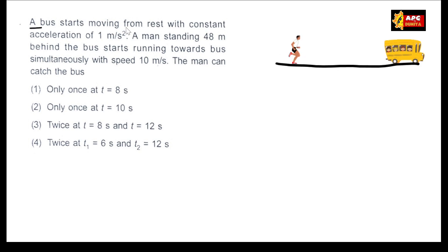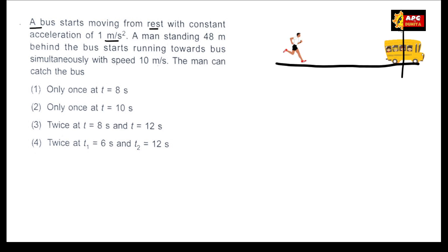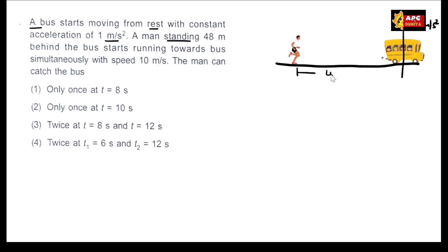A bus starts moving from rest with a constant acceleration of 1 meter per second square. A man standing 48 meters behind the bus starts running towards the bus simultaneously with the speed of 10 meters per second.